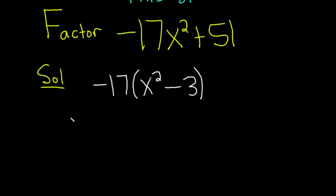There is a formula called the difference of squares formula. It says if you have a squared minus b squared, that's equal to parentheses a minus b times a plus b.